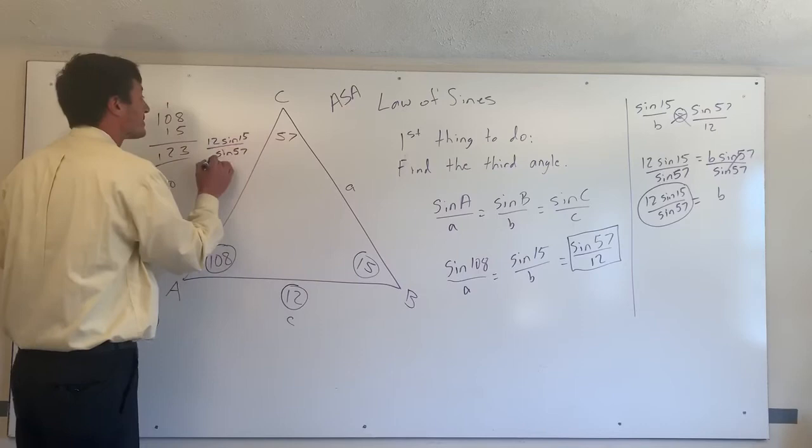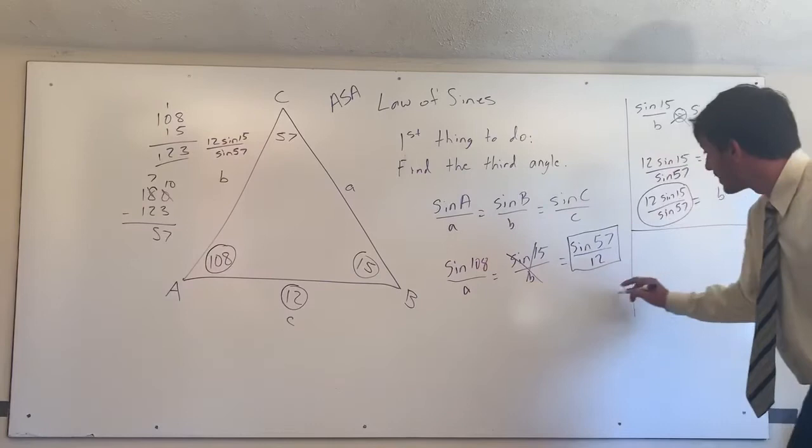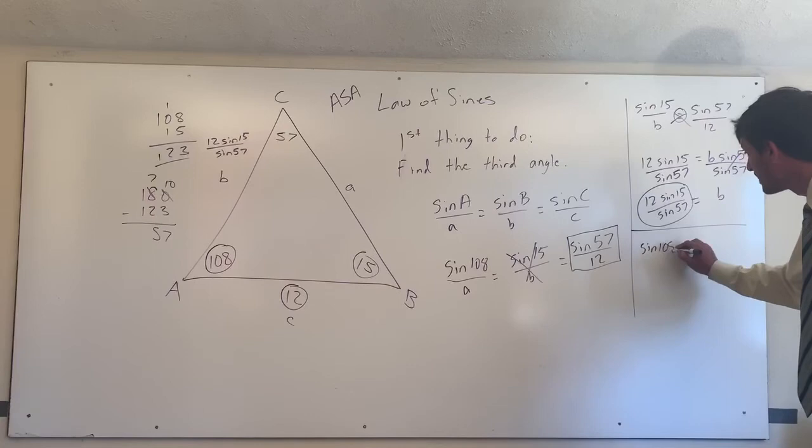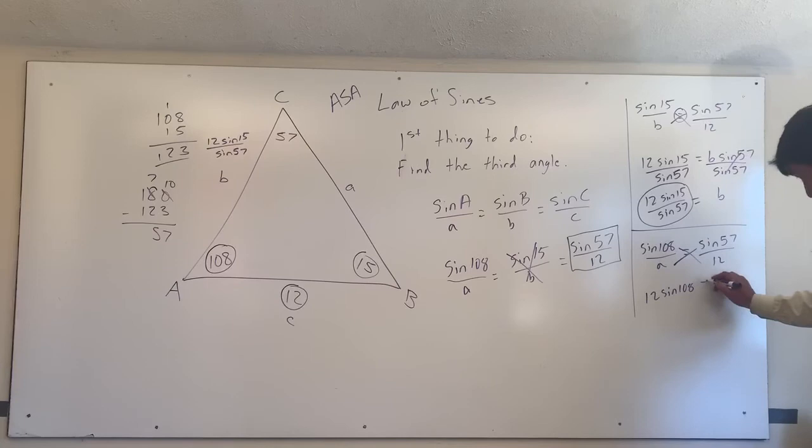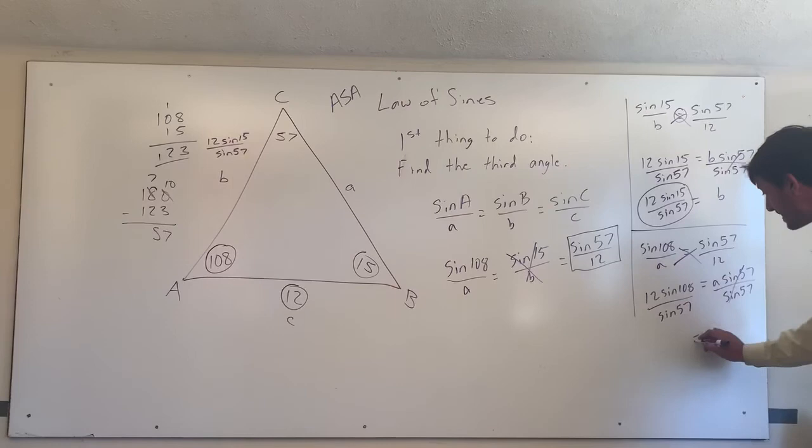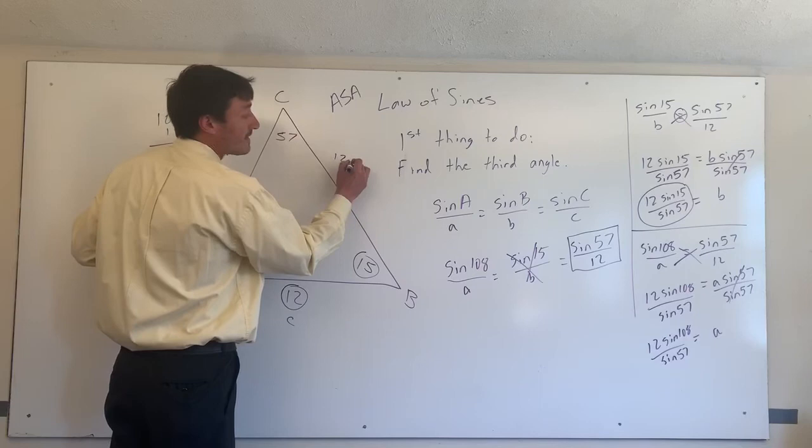And now let's find a. To find a, we're done with this one. We've found b. To find a, we're going to set the sine of 57 over 12 equal to the sine of 108 over a. So the sine of 108 over a is equal to the sine of 57 over 12. Again, cross multiply. 12 times the sine of 108 is equal to a times the sine of 57. Again, divide by the sine of 57 because we want to get a by itself. And now we have a is equal to 12 times the sine of 108 divided by the sine of 57. And so we have now successfully found side length a as 12 sine of 108 divided by the sine of 57.